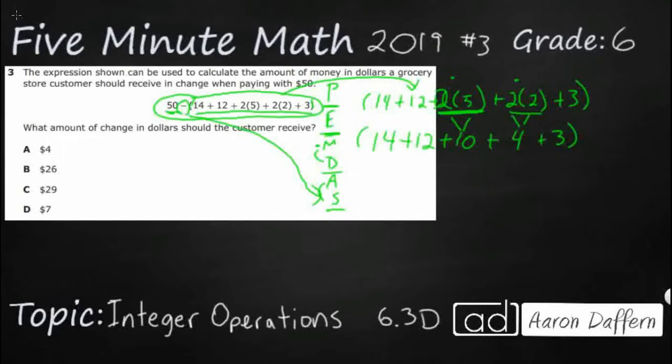And then once you've done that simple step, take a look. I've got 14, 12, 10, 4, and 3, and it's all addition. So, I'm just going to add straight across.